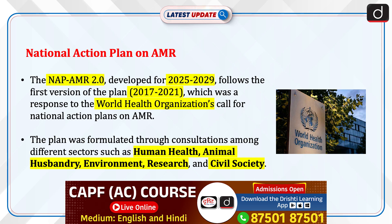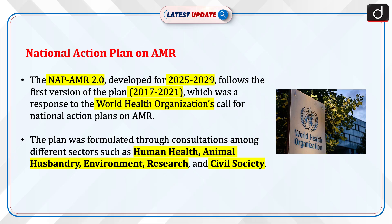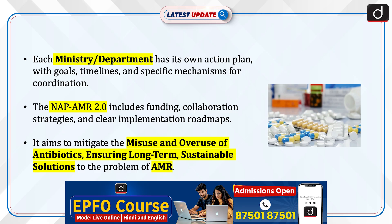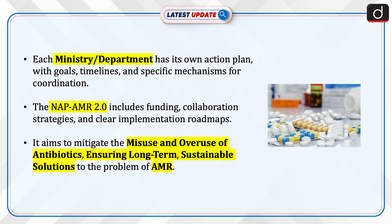Now let's discuss the National Action Plan on Antimicrobial Resistance 2.0. It is developed for 2025–2029, and follows the first version of the plan for 2017–2021, which was a response to the World Health Organization's call for national action plans on antimicrobial resistance. The plan was formulated through consultations among different sectors such as human health, animal husbandry, environment, research, and civil society. Each ministry or department has its own action plan with goals, timelines, and specific mechanisms for coordination. The plan includes funding, collaboration strategies, and clear implementation roadmaps.